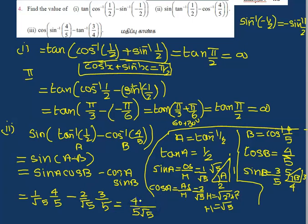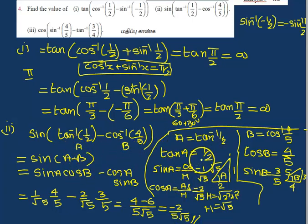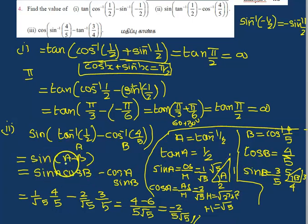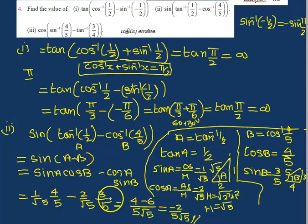The answer: LCM is 5 root 5. 4 minus 2 threes are 6, so 4 minus 6 equals minus 2 by 5 root 5. This gives 2 by root 5, and 1 by root 5 multiplied gives the result.